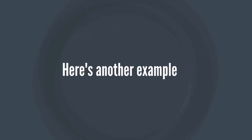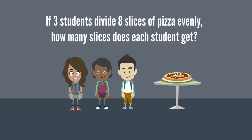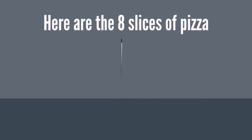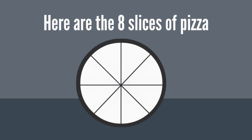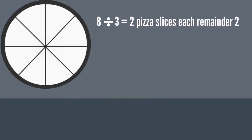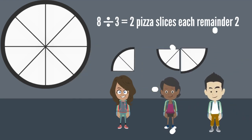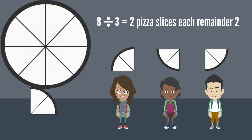Here's another example. If 3 students divide 8 slices of pizza evenly, how many slices does each student get? Here are the 8 slices of pizza. 8 divided by 3 equals 2 pizza slices each, remainder 2.